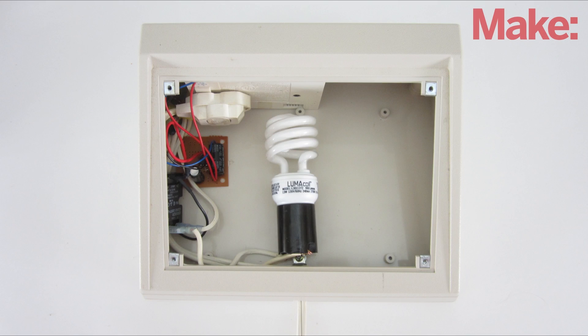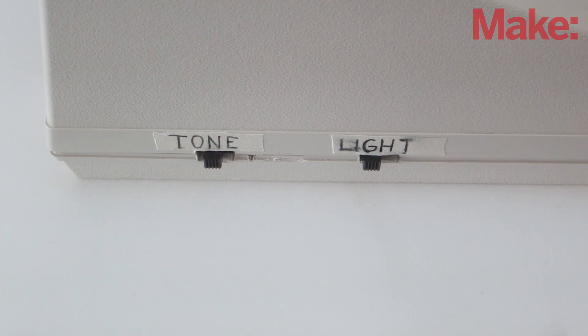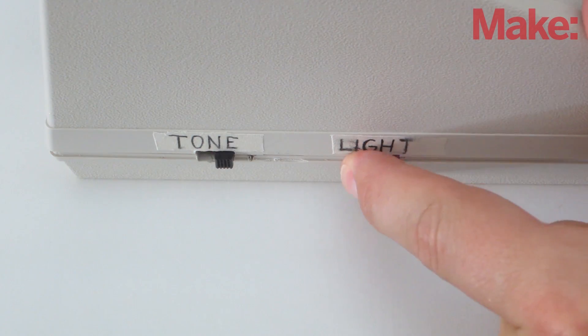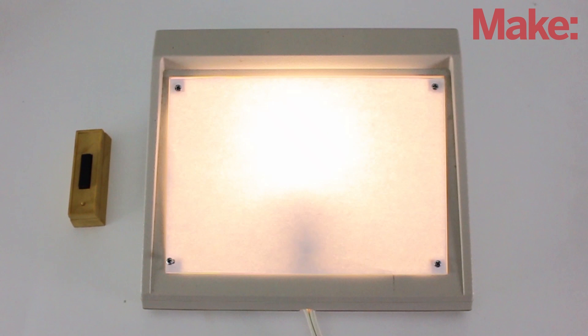Now your light doorbell is complete. You can use the switches to turn the tone and the light on and off whenever you want. The light can help when it's hard to hear the tone, or when you have the tone turned off because someone is sleeping. Thanks for watching, and check back next week for more DIY hacks and how-tos.